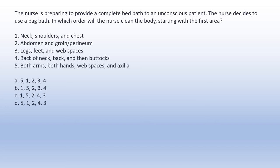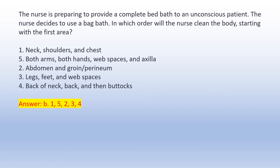The nurse is preparing to provide a complete bed bath to an unconscious patient using a bag bath. In which order will the nurse clean the body, starting with the first area? 1. Neck, shoulders and chest. 2. Abdomen and groin, perineum. 3. Legs, feet and web spaces. 4. Back of neck, back and then buttocks. 5. Both arms, both hands, web spaces and axilla. Answer sequence: neck/shoulders/chest, abdomen/groin/perineum, legs/feet/web spaces, back of neck/back/buttocks.